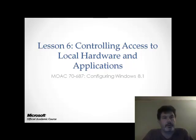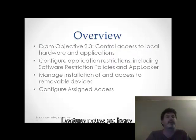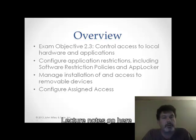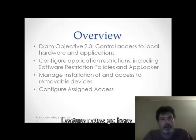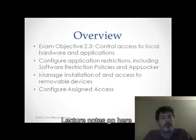Welcome back folks. Today we're going to discuss Lesson 6, Controlling Access to Local Hardware and Applications. Today's lecture covers Exam Objective 2.3. We're going to be looking at managing installation of and access to removable devices, talking about application restrictions and how to configure them using Software Restriction Policies and AppLocker, and last but not least, configuring assigned access, or what some people like to call kiosk mode.